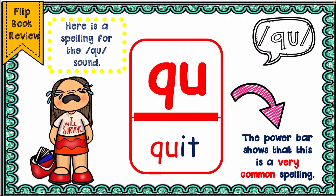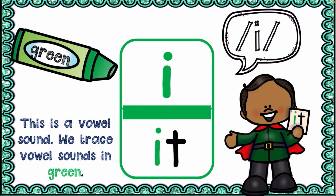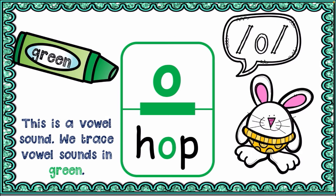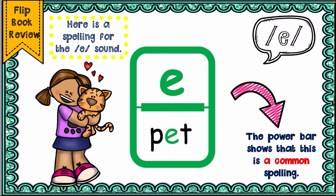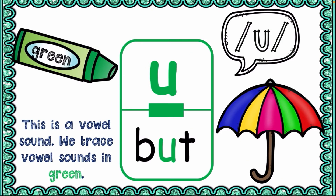We have the /kw/ sound as in 'quit', the /k/ sound as in 'black', the /iː/ sound as in 'eat', and the /ɒ/ sound as in 'hop'. We have the /ɛ/ sound as in 'pet', and the short /æ/ sound as in 'pat' — also present in 'flat', 'heart', 'clap', and 'snap'.